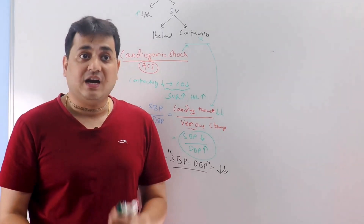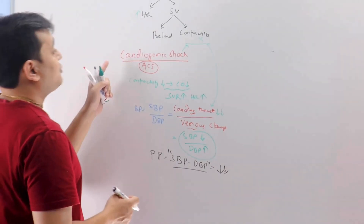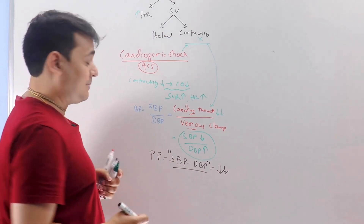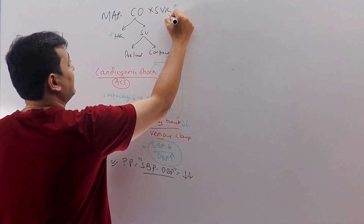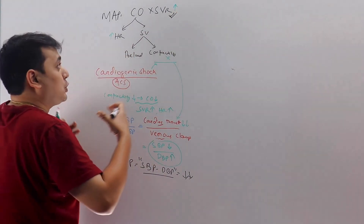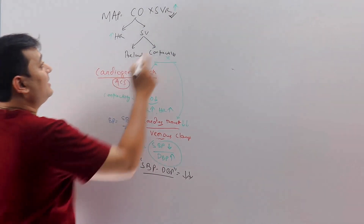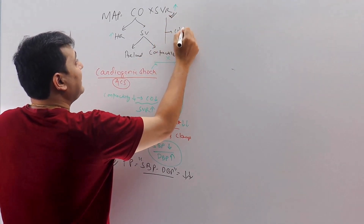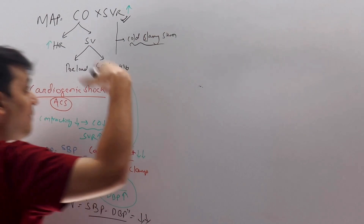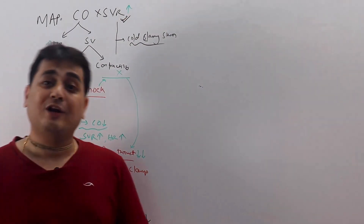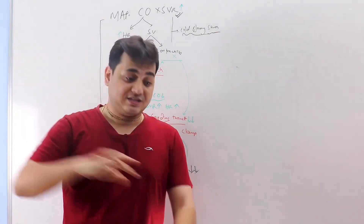You may see blood pressures like 90/70, 100/80, or 80/60 — these narrow pulse pressure readings suggest cardiogenic shock. Do an ECG and look for ST-segment elevation MI. Because SVR is increased and there is no forward flow with tight peripheral vasculature, the patient will present with cold, clammy skin, along with delirium, oliguria, and mottling.